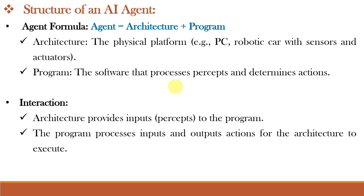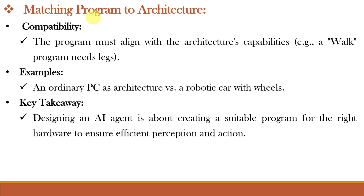The agent program maps the percepts to actions. The architecture gives the program information and the program decides the actions to perform. We know that an AI agent takes the percept using the sensors and takes actions using the effectors or actuators. So if we want to make a successful AI agent, we need to write a good agent program, and this agent program must fit the architecture.